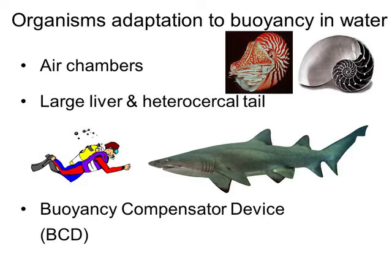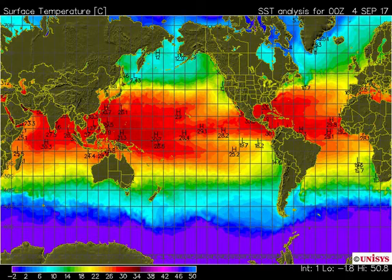Humans use what's known as a buoyancy compensator device, or BCD. For those who go scuba diving, you'll be familiar with BCDs. It's a vest that you wear; you fill it up with air or release air to go up and down within the water column. That covers buoyancy — the next topic is temperature.